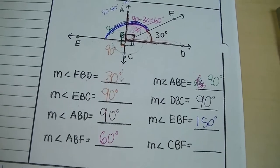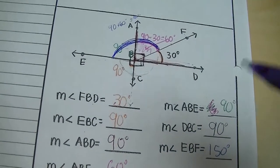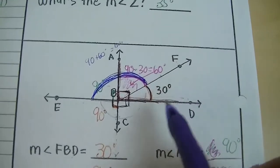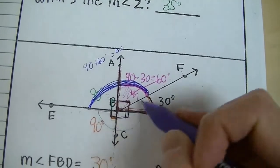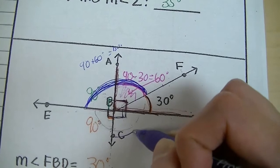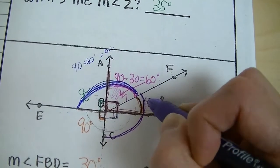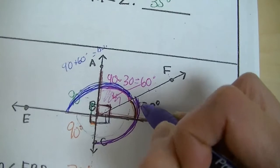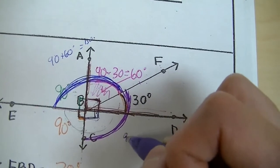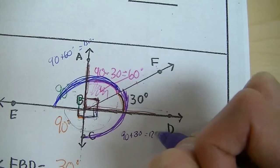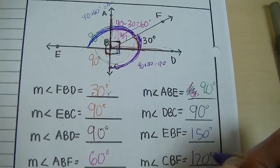The last one is the measurement of angle CBF. Locating CBF, it's made up of angle EBC (90 degrees) and angle FBD (30 degrees). Just add them: 90 + 30 = 120. So the measurement of angle CBF is 120 degrees.